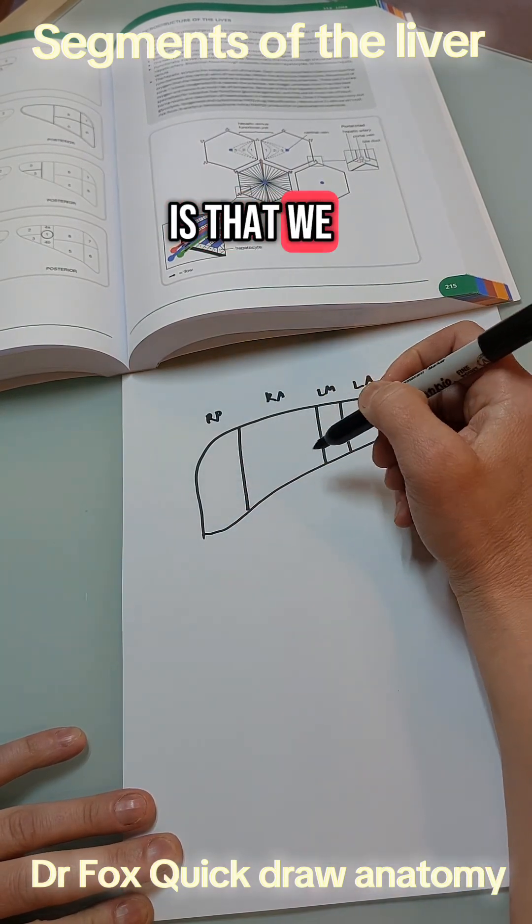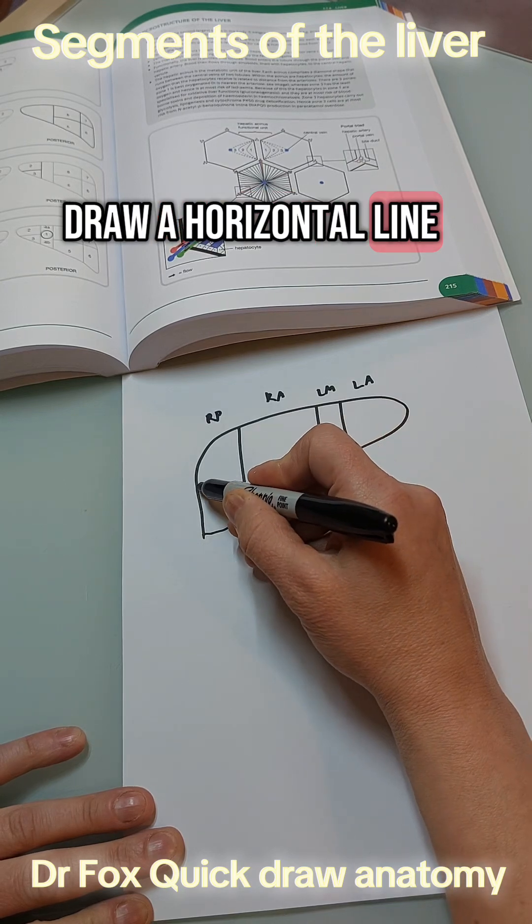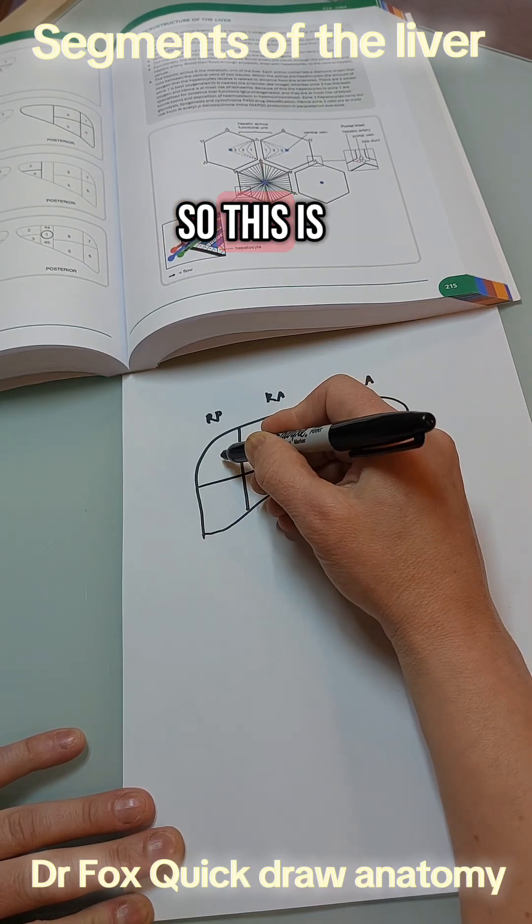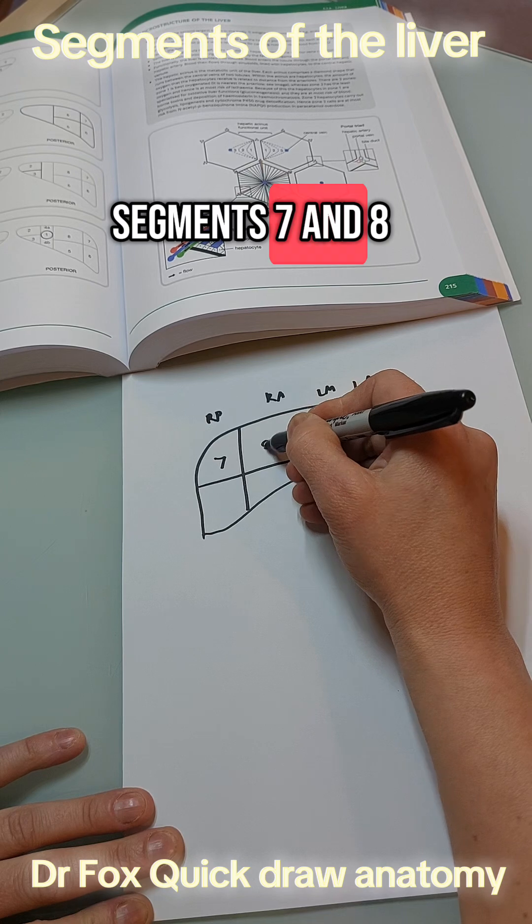The next step is that we draw a horizontal line and this separates this area into four. So this is segments seven, eight,